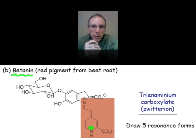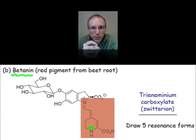The motif that's common to color-generating molecules is extended pi-delocalization. We know how to calculate the molecular orbital energies for such systems, and there's a direct relationship between the color that's observed and the molecular orbital energies that we're able to calculate.